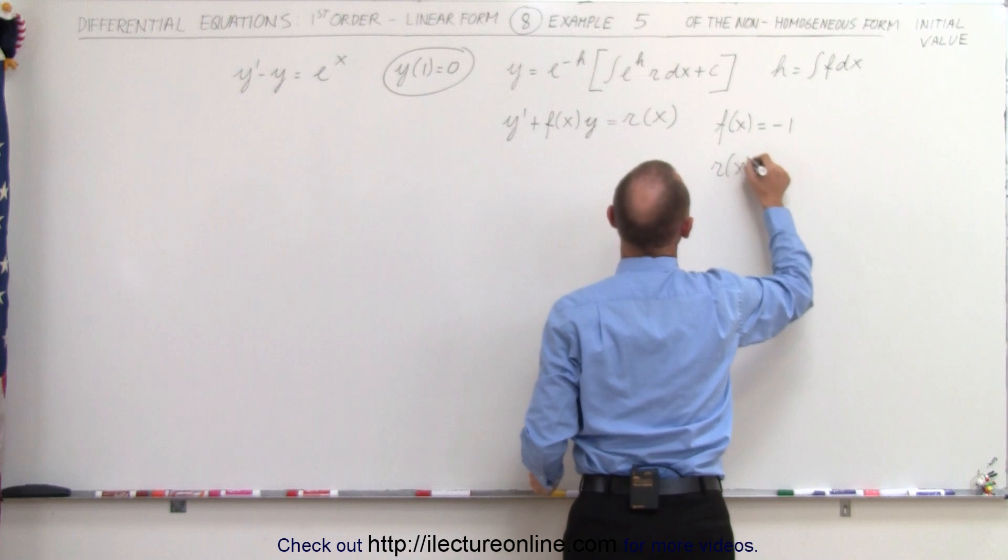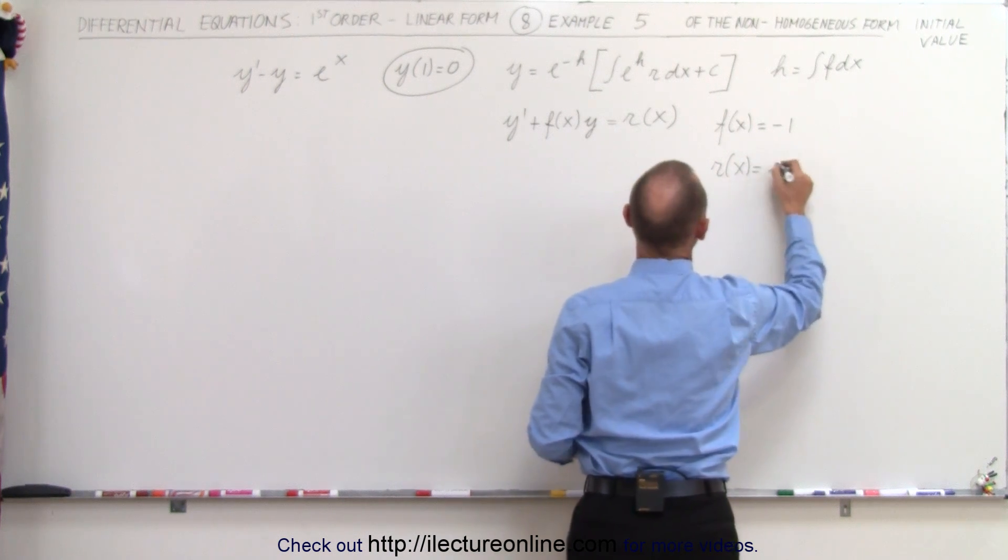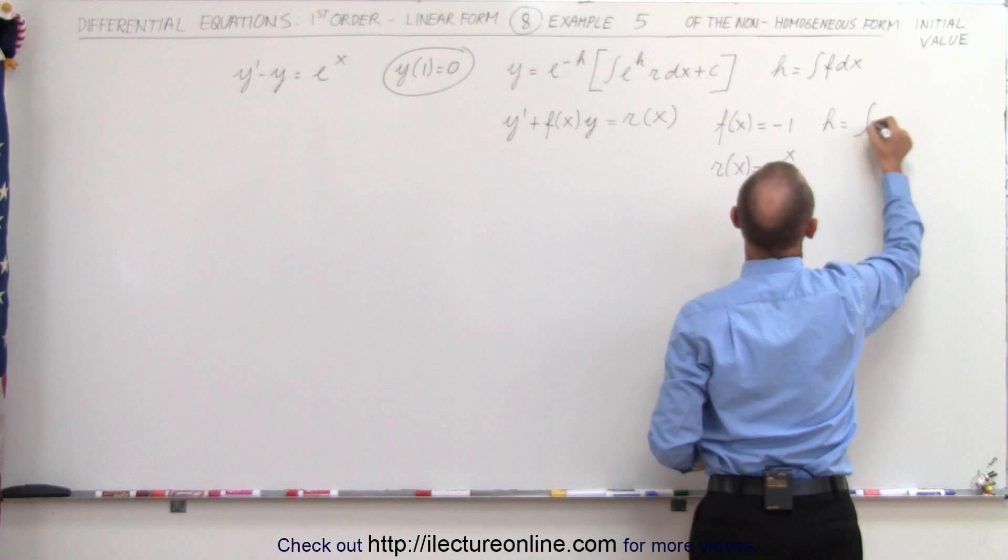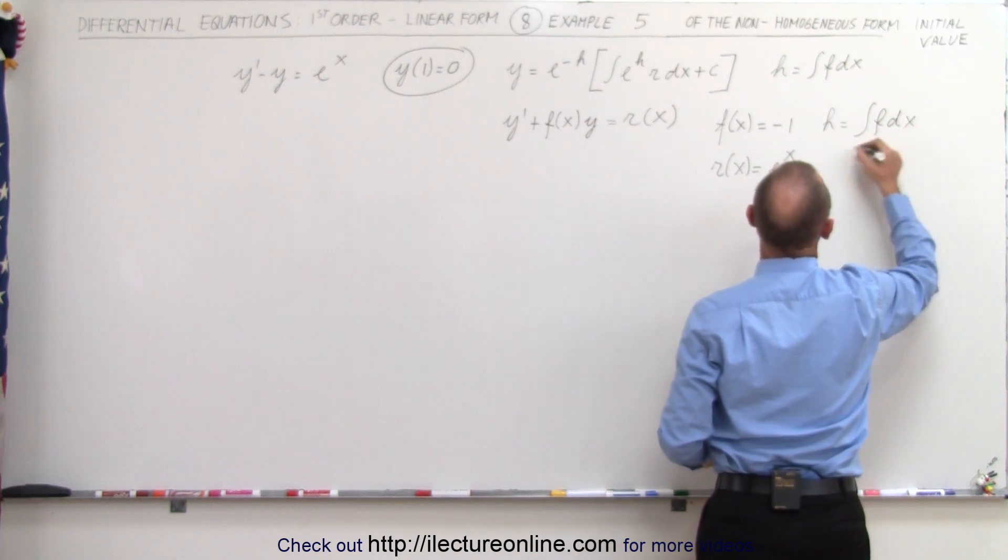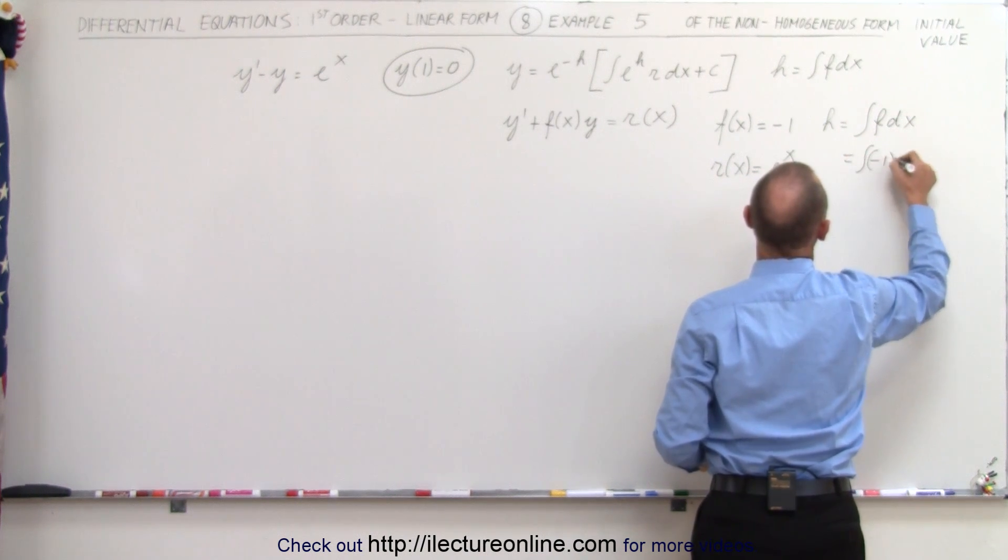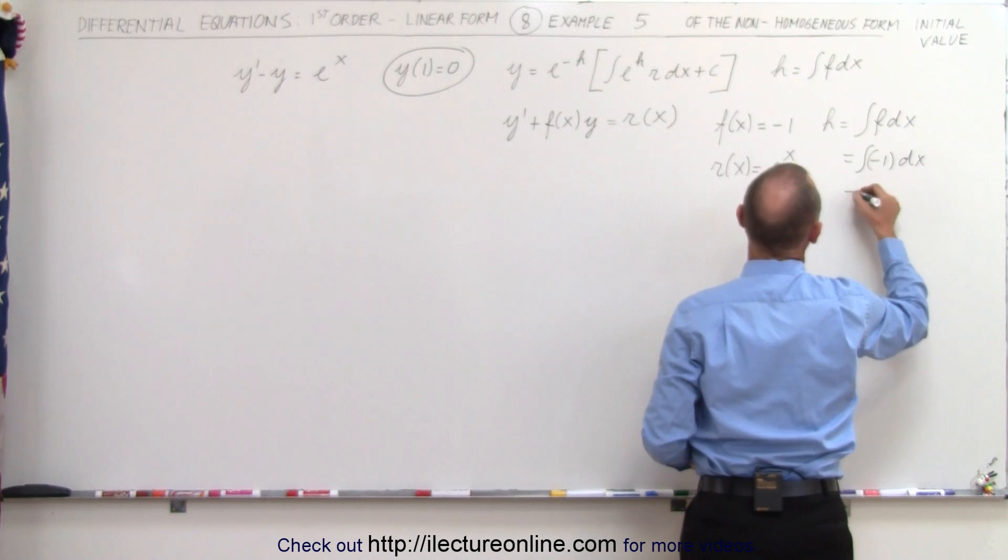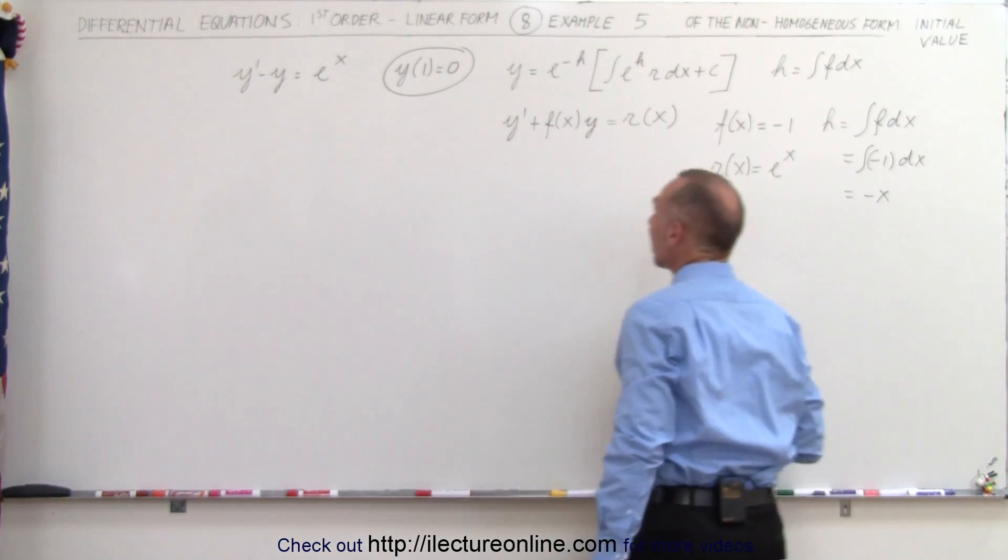r, in this case, which is also a function of x, is equal to e to the x. h, which is equal to the integral of f dx, would be equal to the integral of minus 1 times dx, which simply would be equal to minus x. So h in this case is minus x.